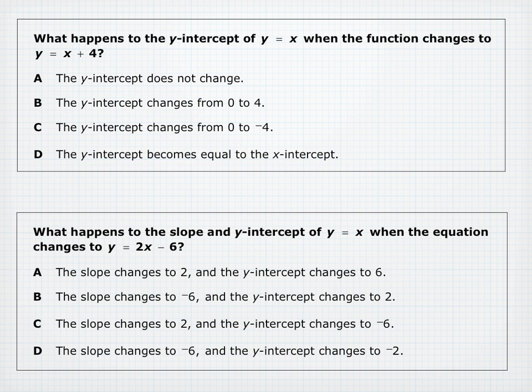When Y equals X changes to Y equals X plus 4, the Y-intercept changes from 0 to 4. When Y equals X changes to Y equals 2X minus 6, the slope changes to 2 and the Y-intercept changes to negative 6 — answer C.